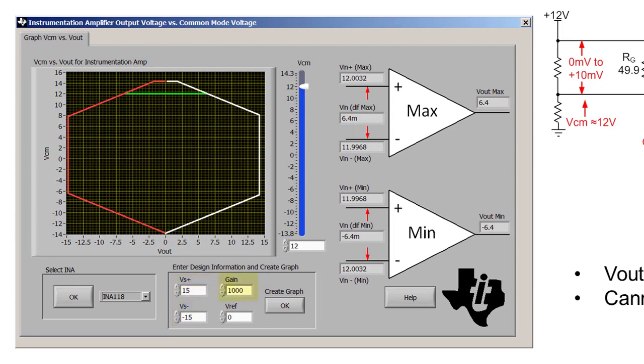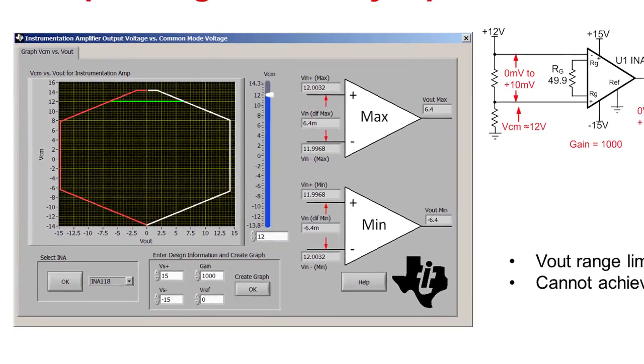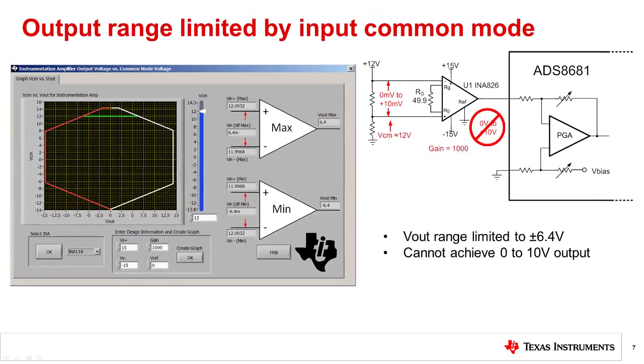After inputting the supply voltages, gain, and reference voltage to the software tool, it creates the red and white common mode versus output plot shown. Adjusting the common mode to 12 volts shows that the common mode is limited to plus or minus 6.4 volts. Therefore, we cannot get 0 to 10 volts in this case, so a different amplifier or configuration will be required.